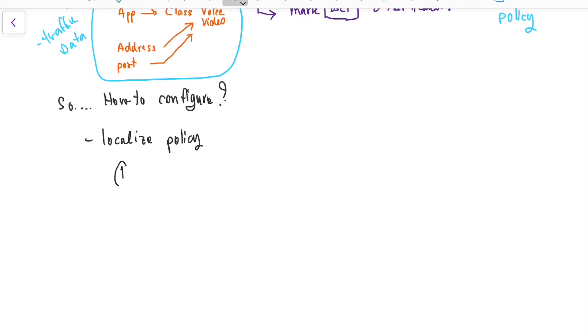First, we do the localized policies. To do the localized policy, we need to go to localized policy, and then we need to configure the class list. We're going to have Q0, Q1, Q2, Q3, or it can be up to Q7.